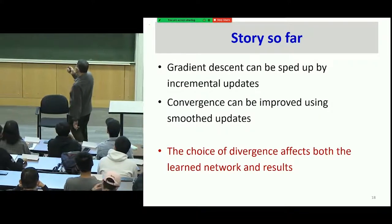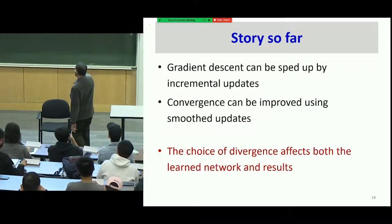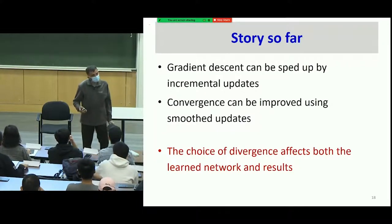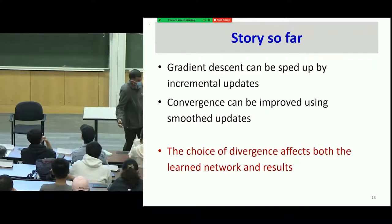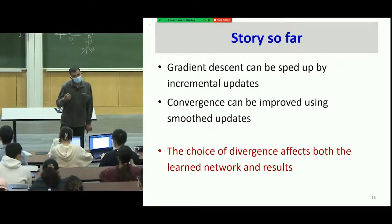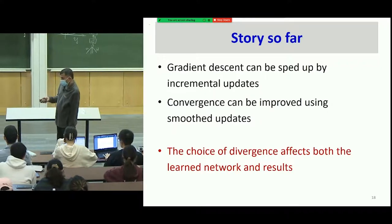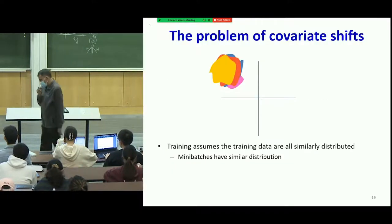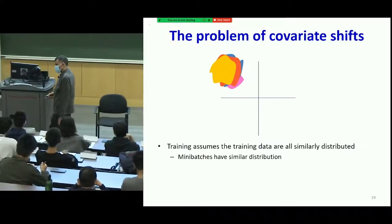Story so far: gradient descent can be sped up by incremental updates. The choice of divergence affects both the learned network and the results. If your divergence is not appropriately chosen, your loss function will be problematic and you'll either bounce around or end up in a bad place.